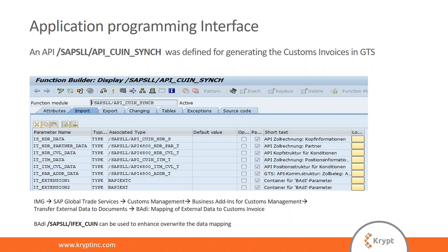Currently, SAP provides an out-of-the-box integration for the intercompany billing scenario. In this case, you can save your intercompany billing document in ECC, and the ECC system will remotely call and create the invoice object in GTS. You can then use this invoice object in the import process. It may be that commercial invoices are coming from outside the ERP system, and by triggering this API you can still integrate them into the declarations. There is also a BADI you would want to look at if you want to override standard fields or map custom fields into the invoice.